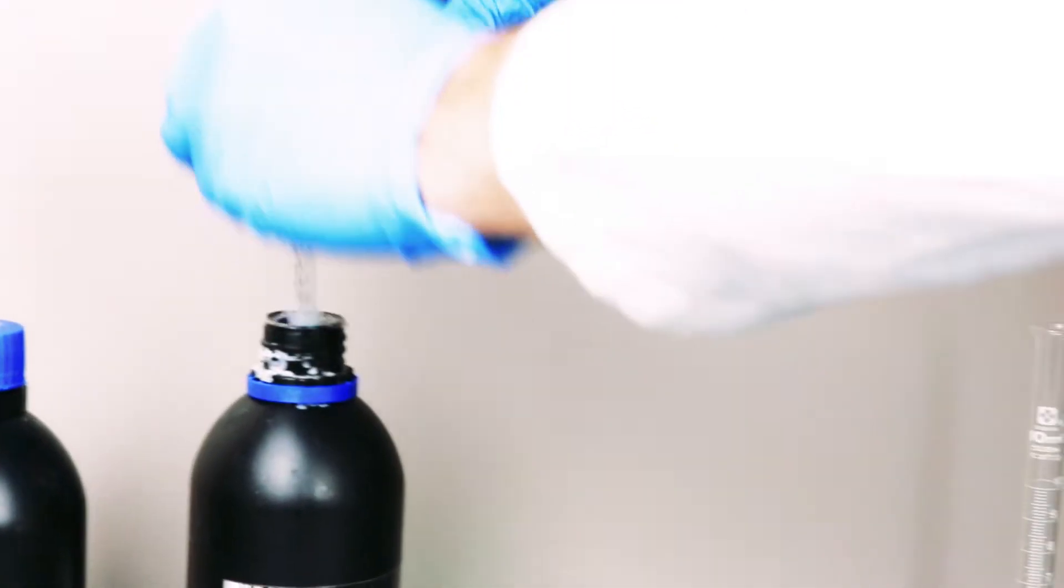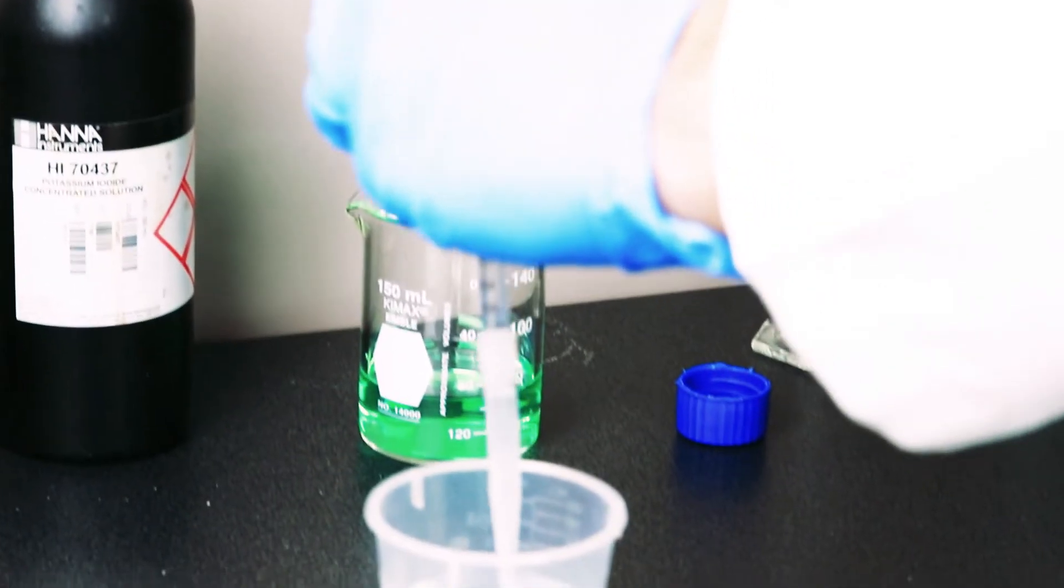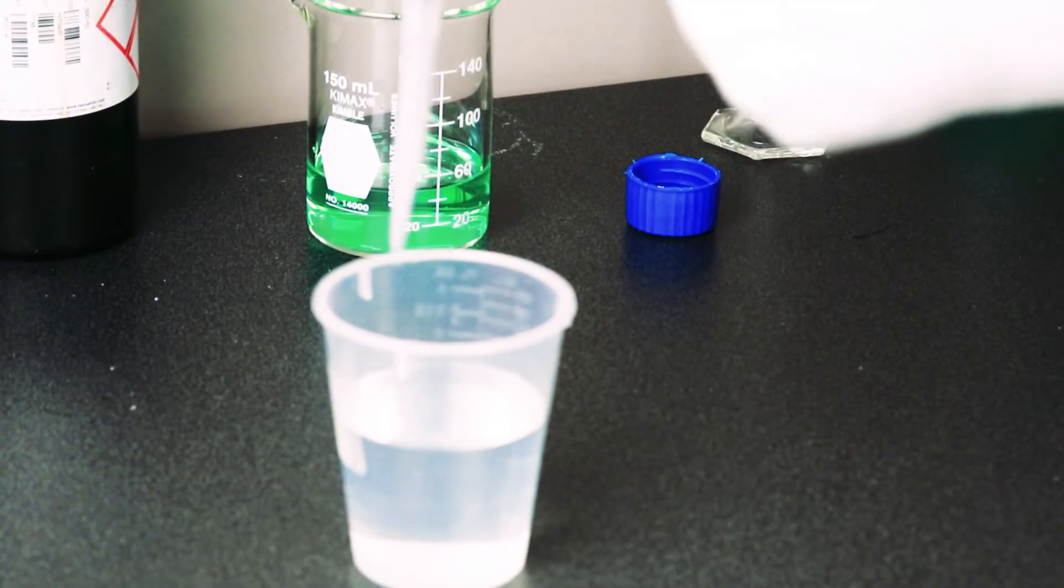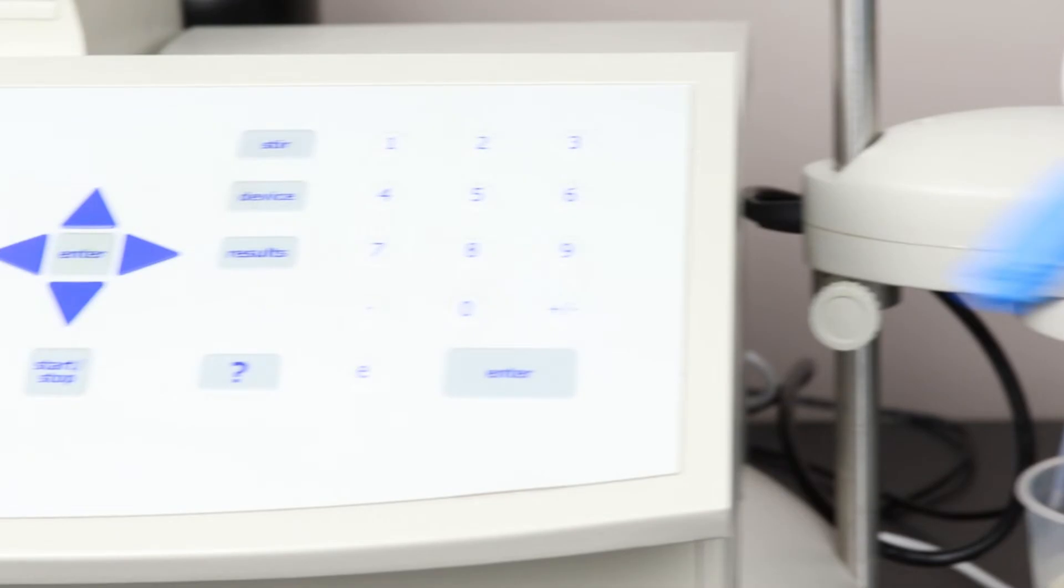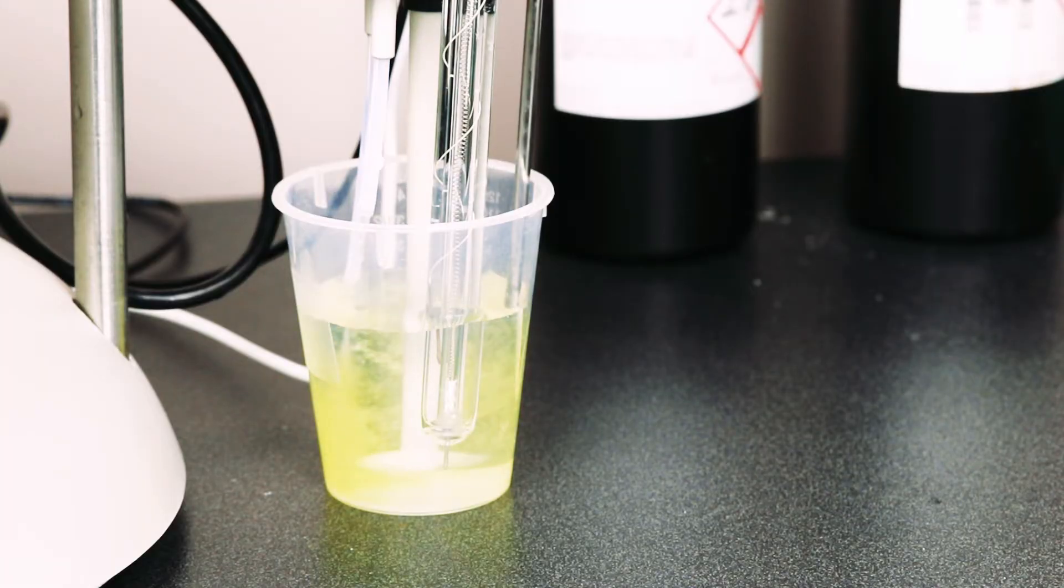Next, add 2 milliliters of potassium iodide to the sample. Place the beaker under the dosing tip and press start. The titrator automatically doses the first titrant, iodine, in excess.